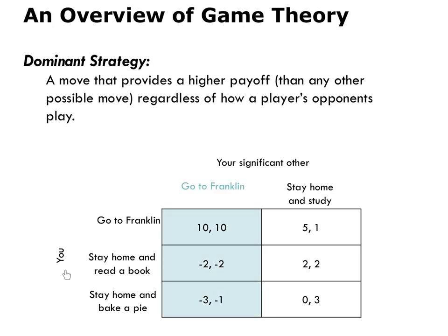To determine what your best move should be, first consider the possibility that your significant other will go to Franklin. If your significant other goes to Franklin and you go to Franklin, your payoff will be ten utils. If you stay at home and read a book, your payoff will be minus two utils. And if you stay at home and bake a pie, your payoff will be minus three utils. So if your significant other goes to Franklin, your best option is to also go to Franklin. Now let's figure out your best move if your significant other instead stays at home and studies. If they stay at home and study and you go to Franklin, your payoff is five. If you stay at home and read a book, your payoff is two. And if you stay at home and bake a pie, your payoff is zero. So if you think your significant other will stay at home and study, your best move is to go to Franklin because that move has the highest payoff.